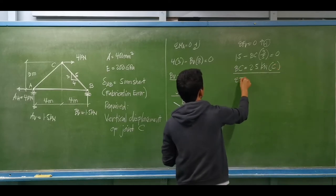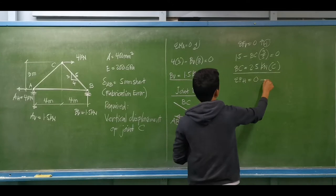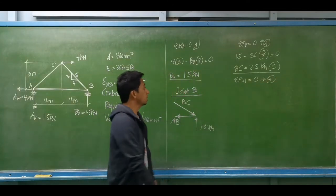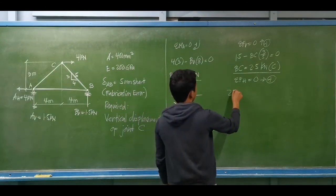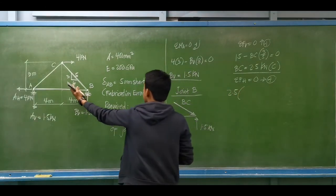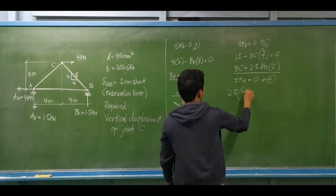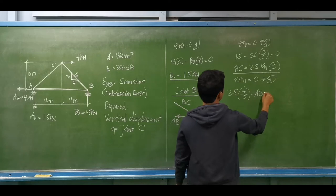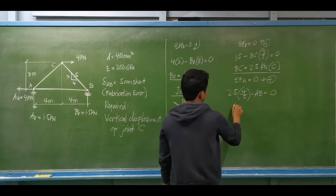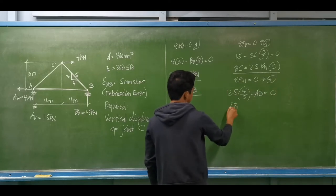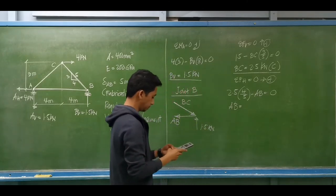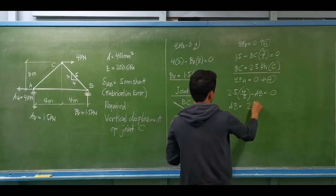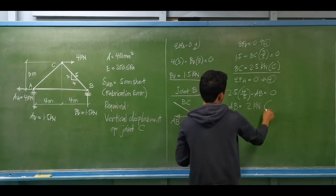Then by summation of forces horizontal equal to zero, with rightward forces positive: the horizontal component of BC is 2.5 times (4/5) minus the actual force for member AB equals zero. So the magnitude of the actual force for member AB is 2 kN and it is under tension.